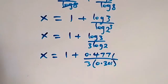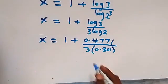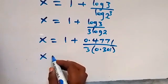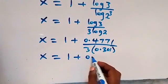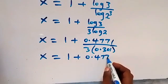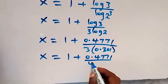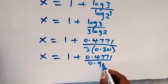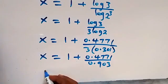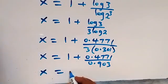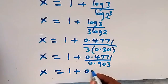This will give us x equals 1 plus 0.4771 divided by 0.903. When we divide, x equals 1 plus 0.5283.